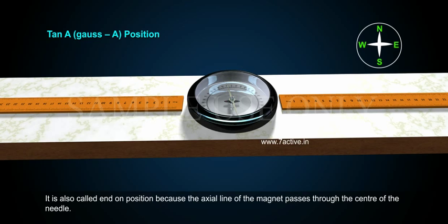Then the deflection magnetometer is said to be arranged in Tan A or Gauss A position. It is also called end on position because the axial line of the magnet passes through the center of the needle.